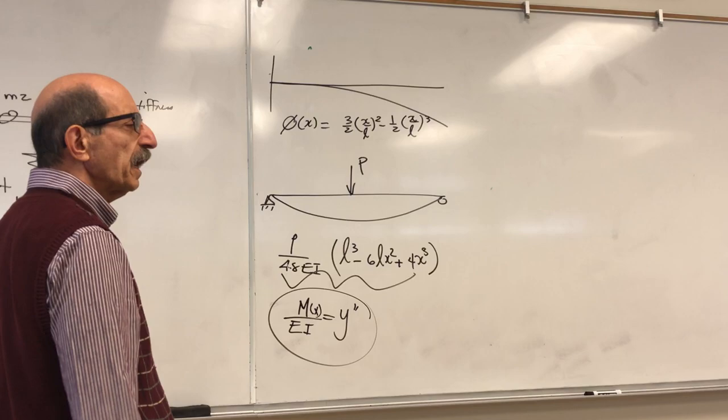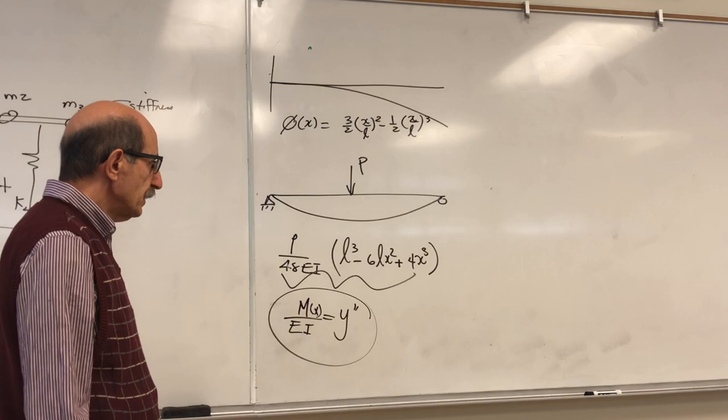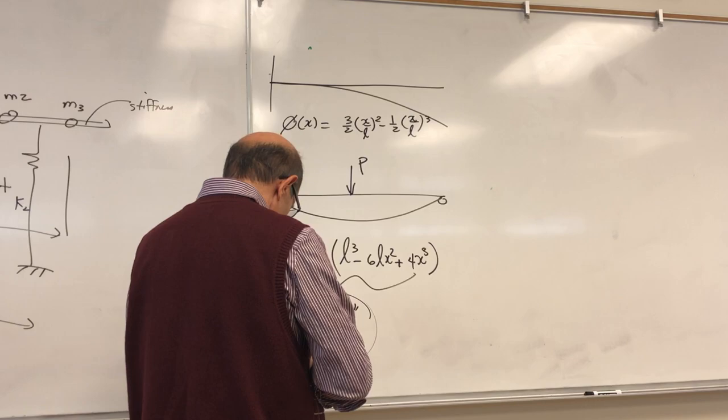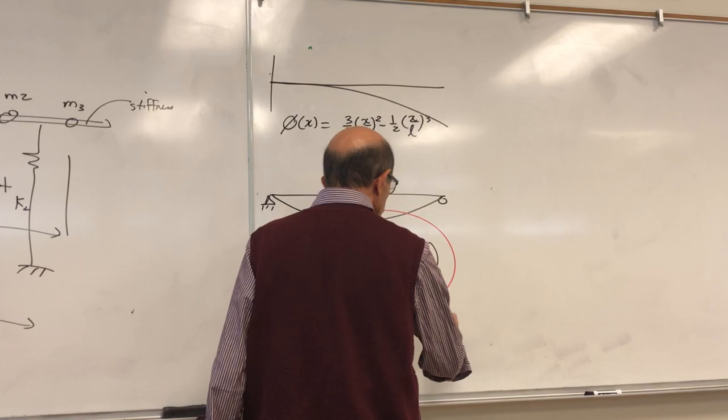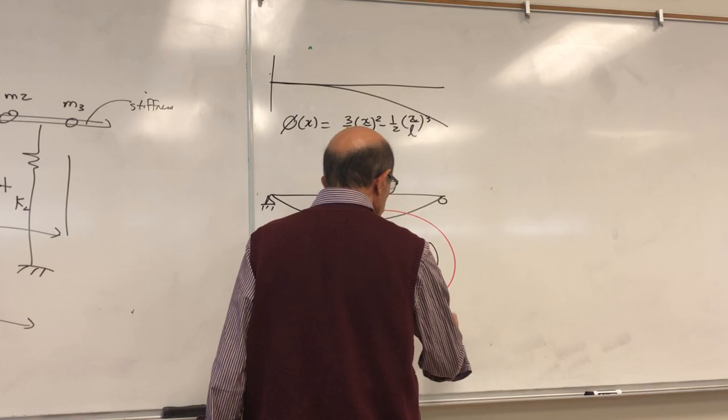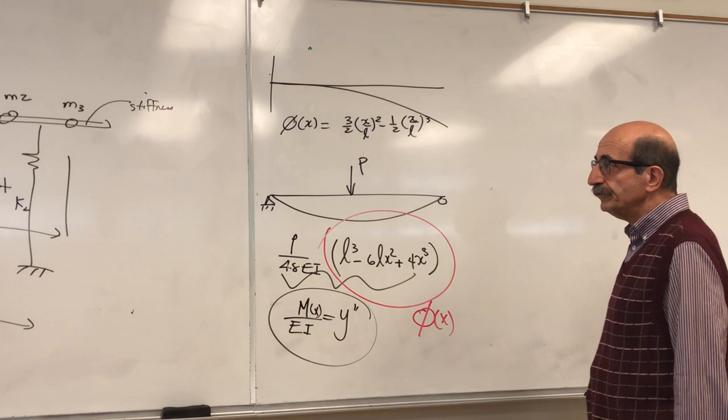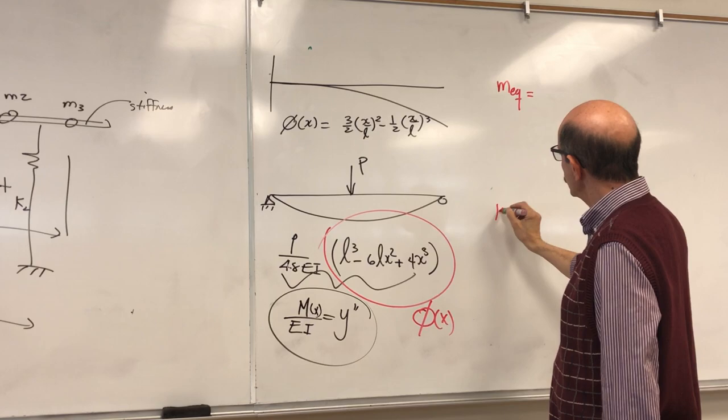Student: So we never have to derive them? Instructor: You don't have to derive them. They're either given to you or they're tabulated. The key is that we need these to identify a function describing the qualitative deformation shape of the structure when using Rayleigh's method.